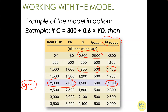The last column — planned aggregate expenditure — is the sum of consumption and planned I. For example, at income 900 and planned I of 500 the total is 1,400. There is only one row where real GDP equals planned aggregate expenditure — that row represents the equilibrium, which determines GDP.